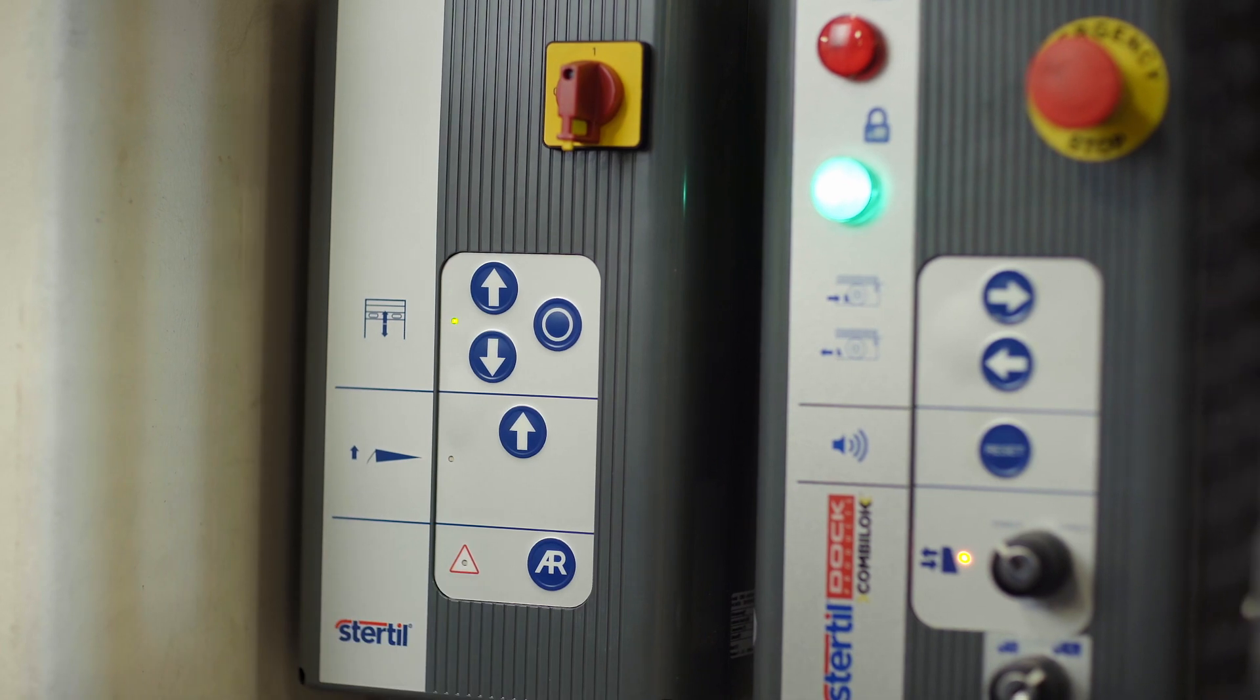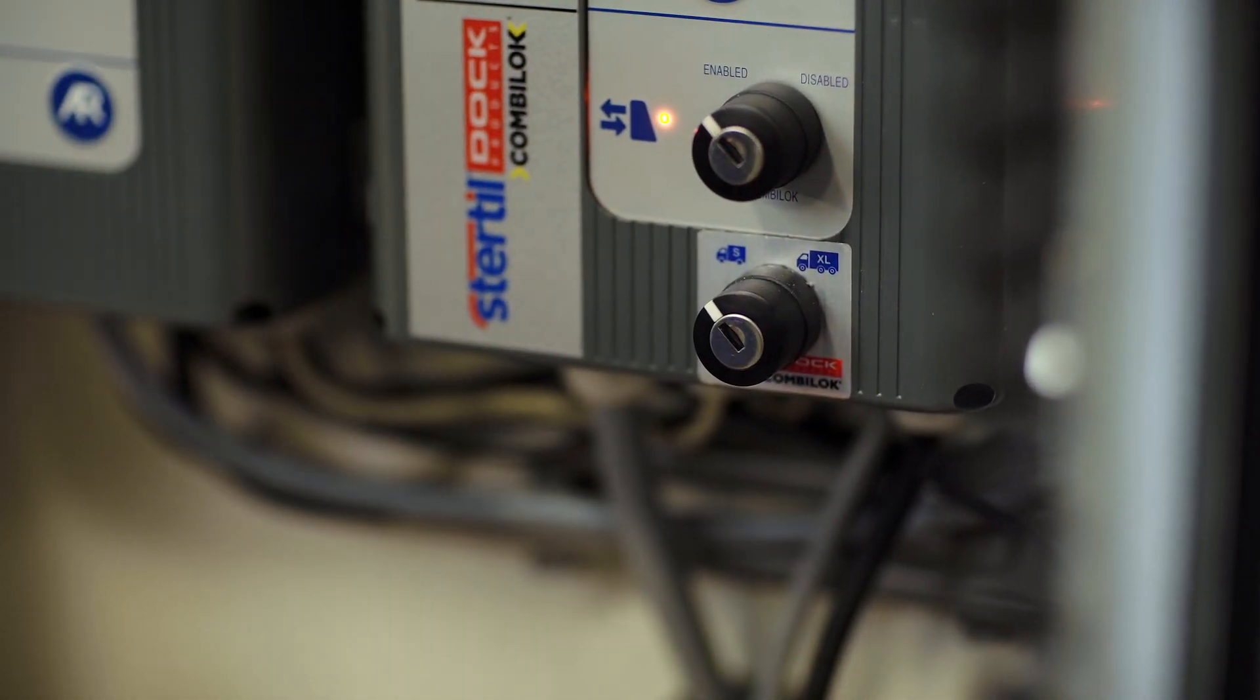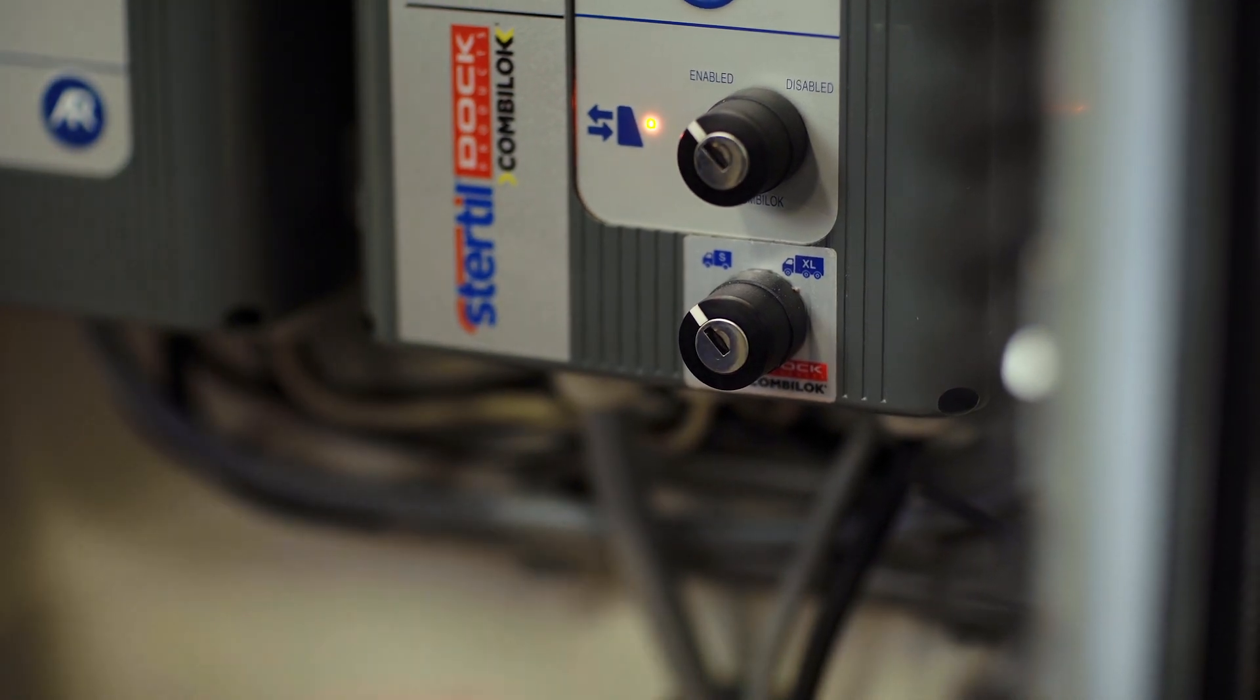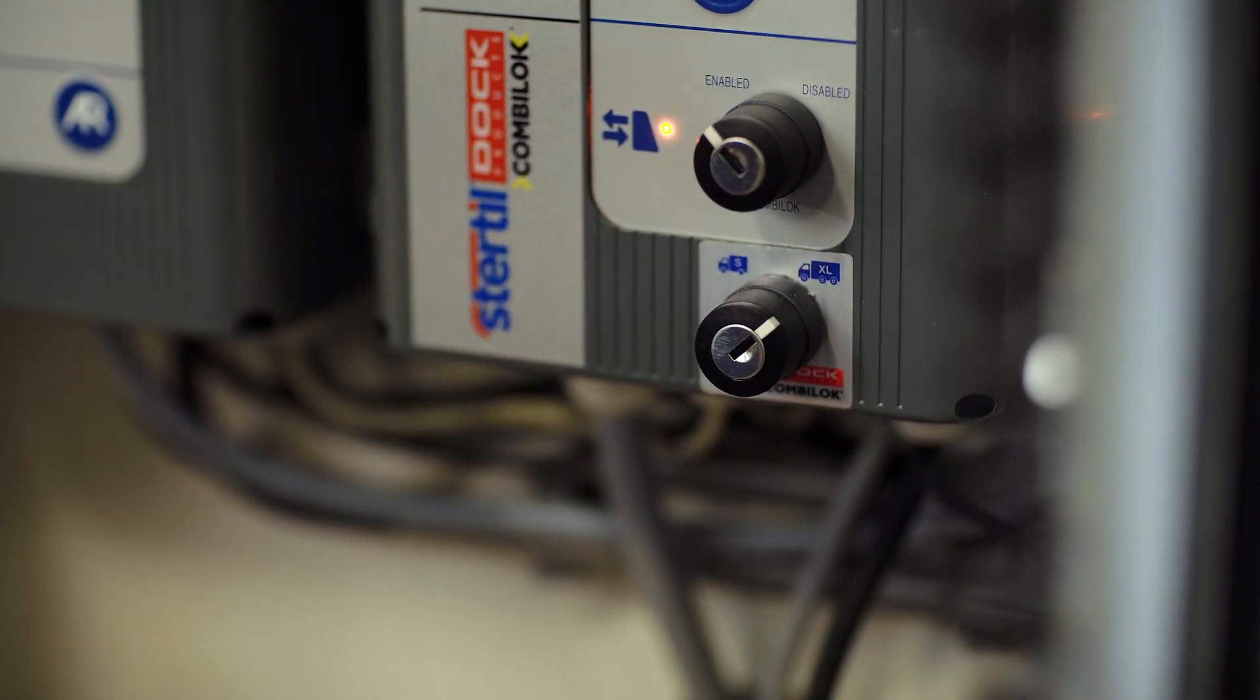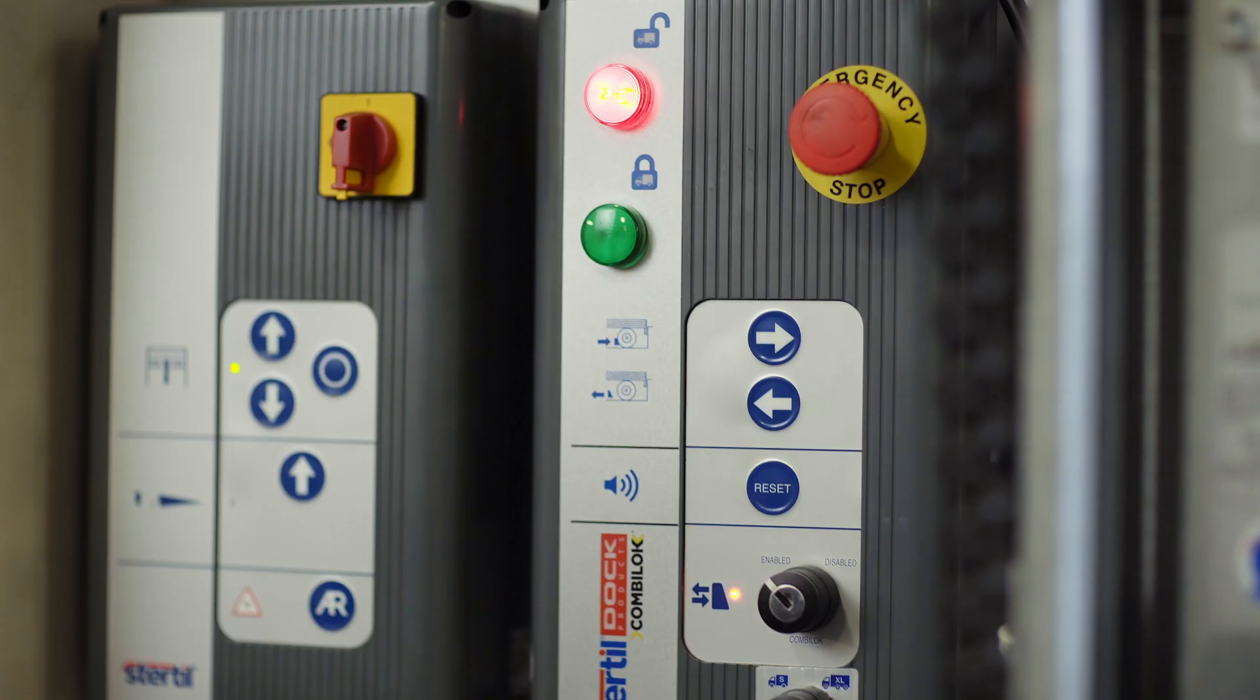This control option allows the use of two programmable blocking heights for a diverse fleet of vehicles. For the absolute premium in safety control, there is also the option to choose the Sturtle Dock Products G2 two-way interlocking sequence.